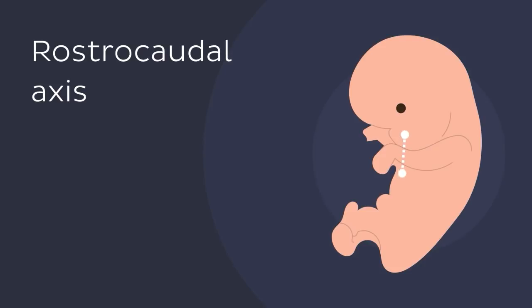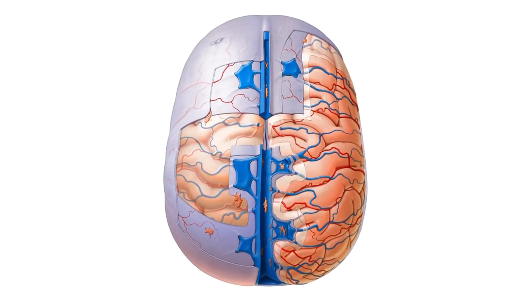So the terms rostral and caudal are important when discussing the rostrocaudal axis in the embryo. But really where they're used most in the human body is within the field of neuroanatomy. Let's now have a look at how we use rostral and caudal within the brain.